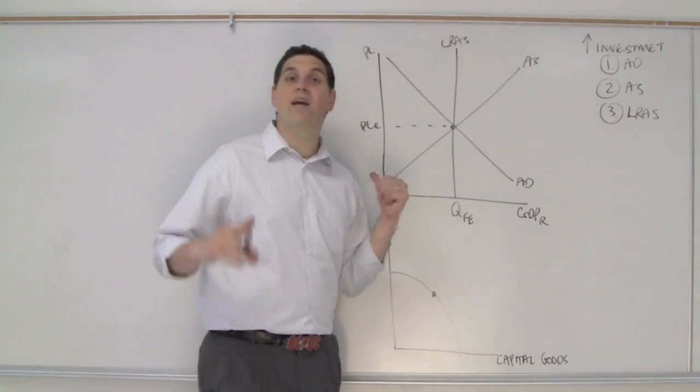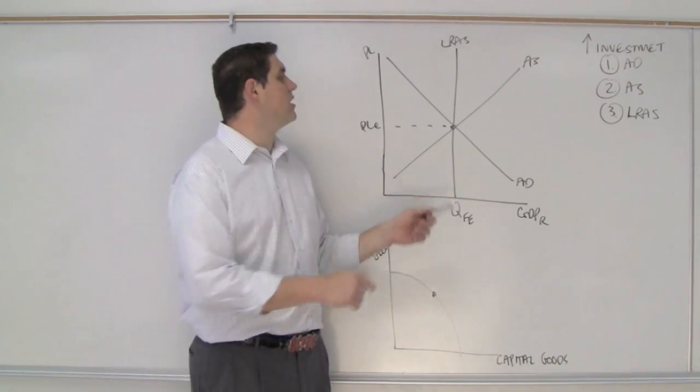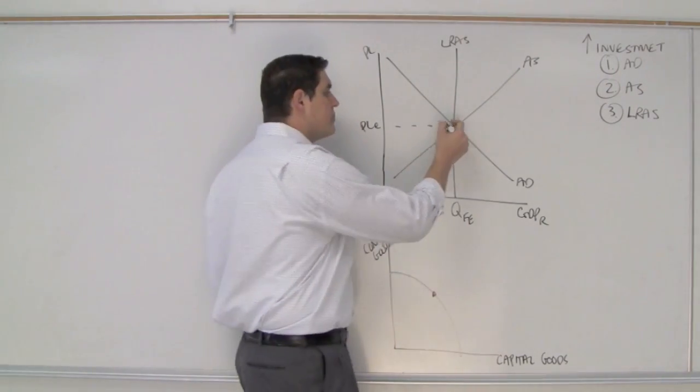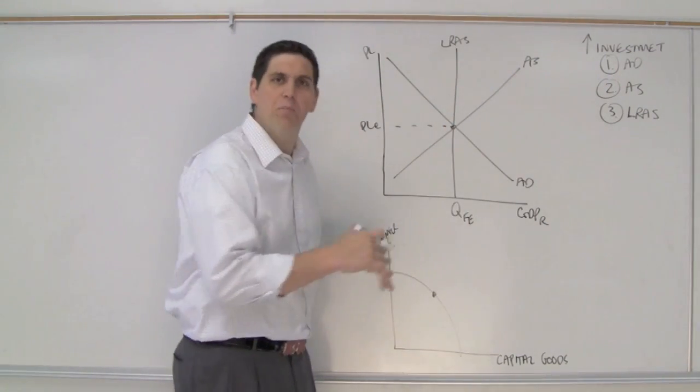We're talking about growth, economic growth. What I have for you is the aggregate demand, aggregate supply, currently at full employment, and I have a production possibilities curve showing you this point and that point of the same idea, full employment output.